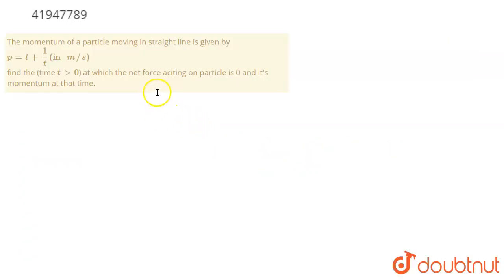In this question, the momentum of a particle in a straight line is given by a relation t plus 1 by t. We have to find the time at which the net force acting on the particle is zero and also the momentum at that time. Let us solve it.